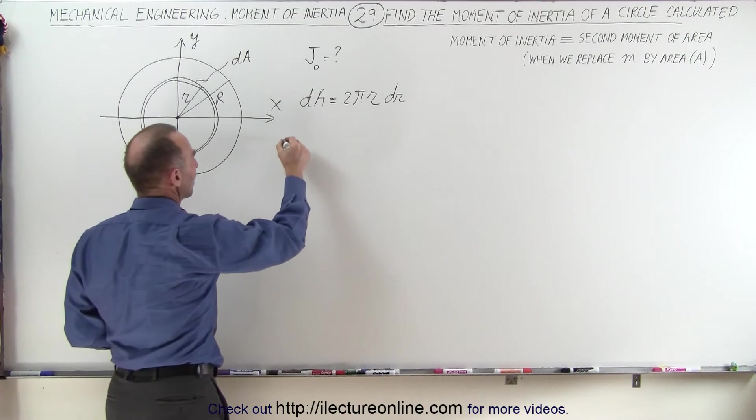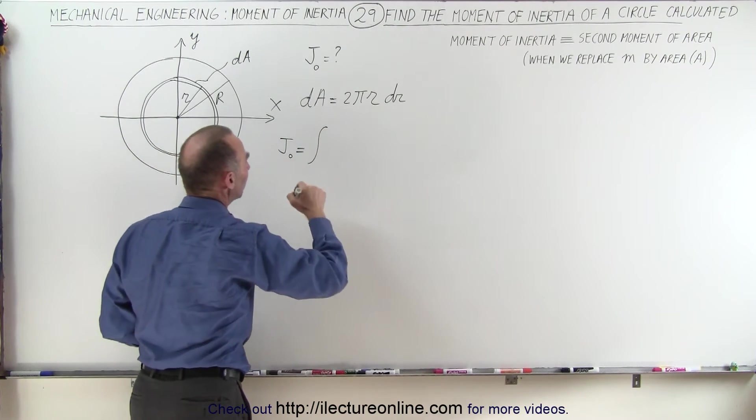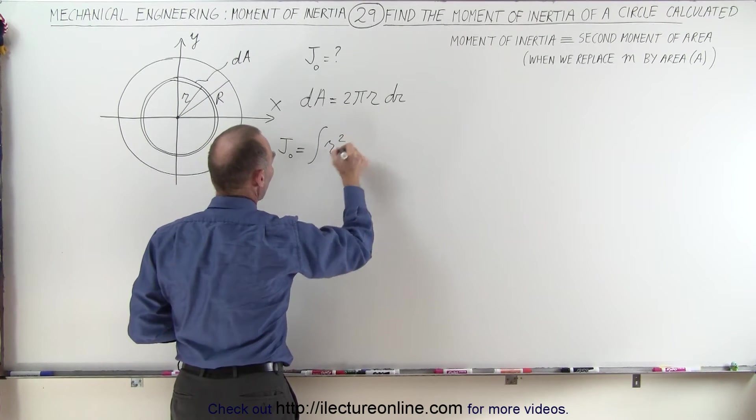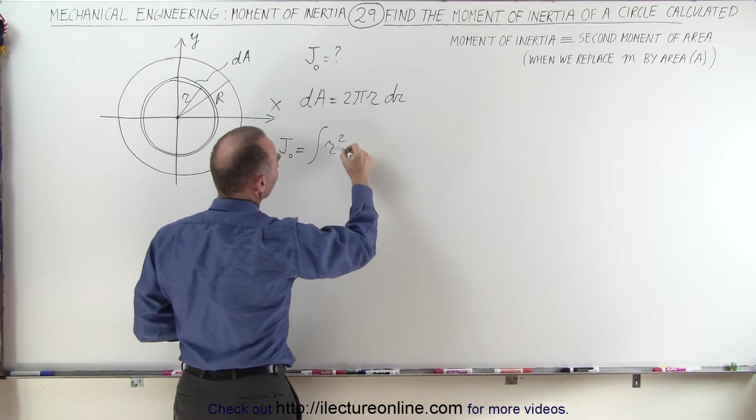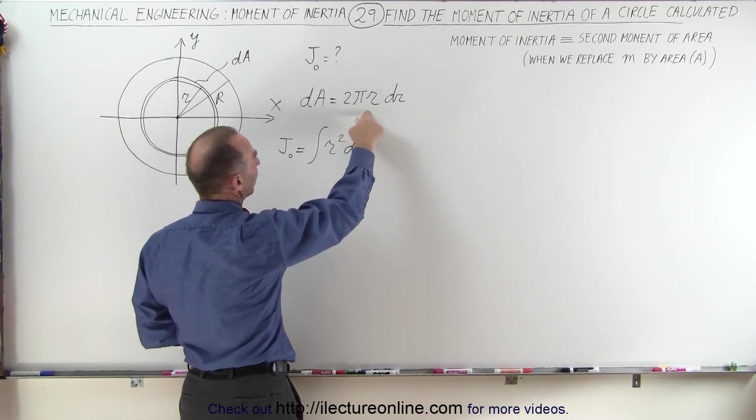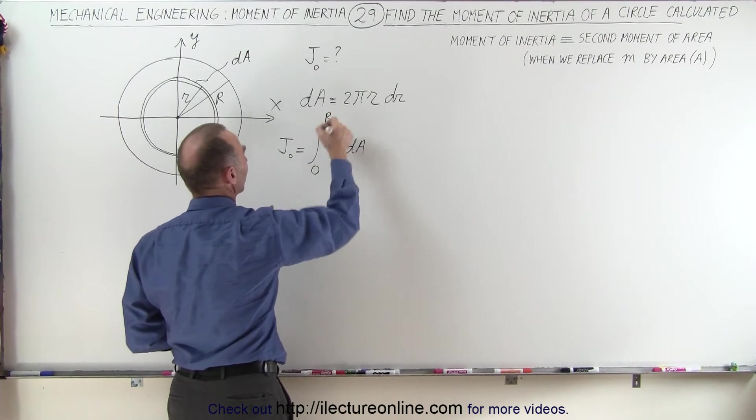All right, then we can say that the moment of inertia relative to the origin is going to be equal to the integral of the distance to that area element, which would be r squared. We have to take that distance squared times DA. And since DA is defined as 2 pi r dr, and of course, we're going to integrate from 0 to the radius of the circle r.